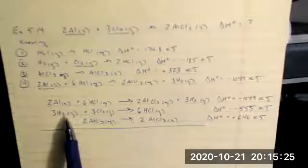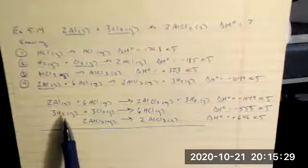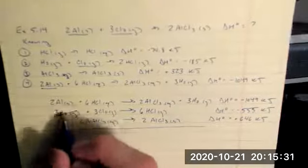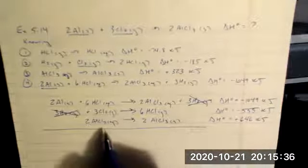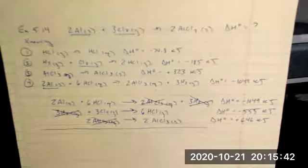So my three H2s, for example, I'm going to get rid of them. Three H2 gas there and there. It's gone. Two AlCl3 aqueous. I had it there and there and it's gone.